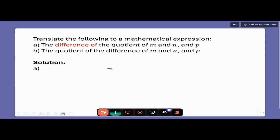Now, what is it the difference of? What are the two things? Well, one of them in blue is the quotient of M and N. And the other thing in green is P. So it is the difference of two things. What are the two things? One in blue here, and one in P.